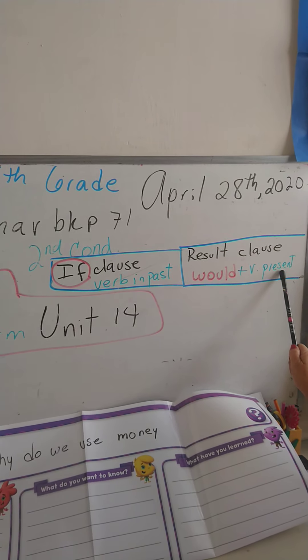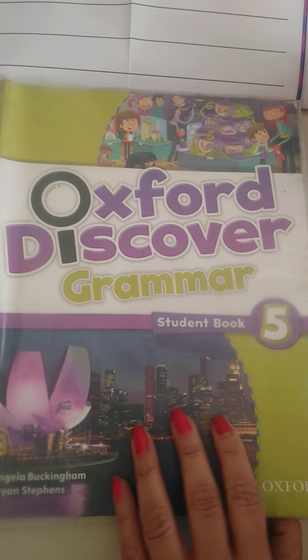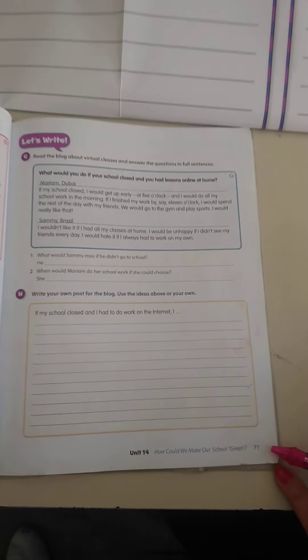In the second conditional, the if clause verb always goes in past tense. Then in the result clause, you use 'would' plus the simple form of the verb. I want all of you to open your grammar books on page 71.